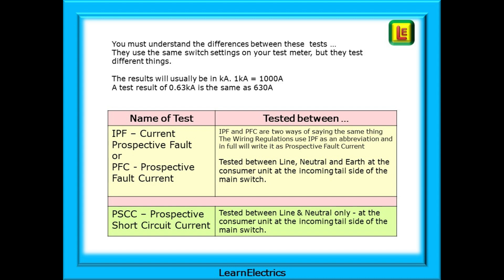PSCC, Prospective Short Circuit Current, is tested between line and neutral only at the consumer unit at the incoming tail side of the main switch. It tells us how much current will flow if there is an electrical short between the line and neutral conductors. And notice there is no mention of earth in a short circuit test.